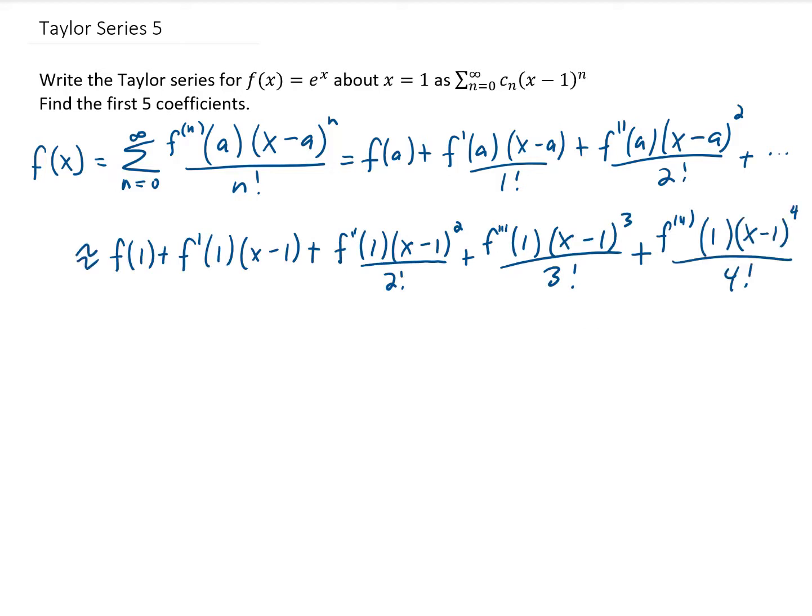Okay, so really what we need to do when finding this Taylor series is find the function value evaluated at x equals 1, and then take a bunch of derivatives and evaluate those at x equals 1 as well. The cool thing about the function that's given is that when we take a derivative of the function, it stays exactly the same.